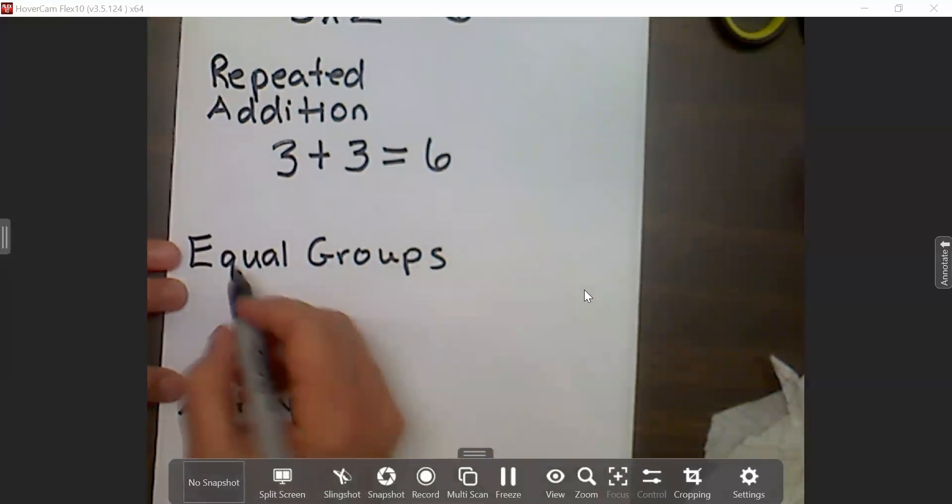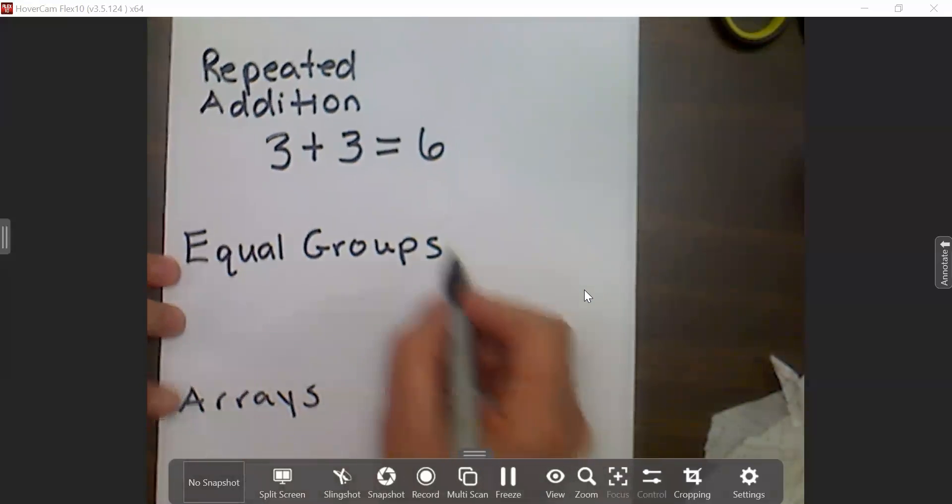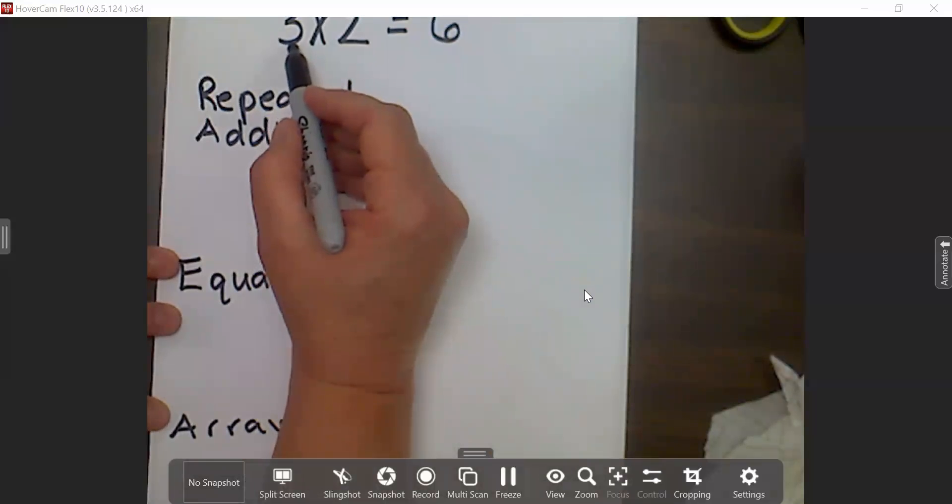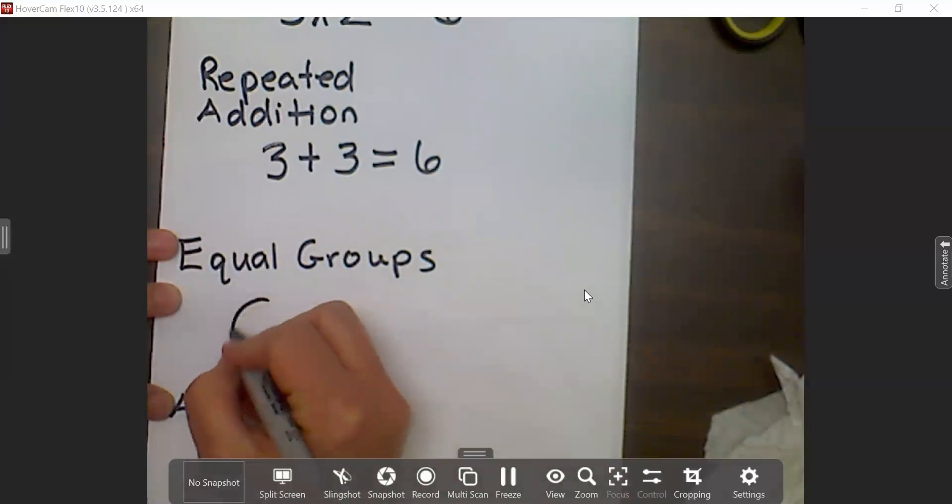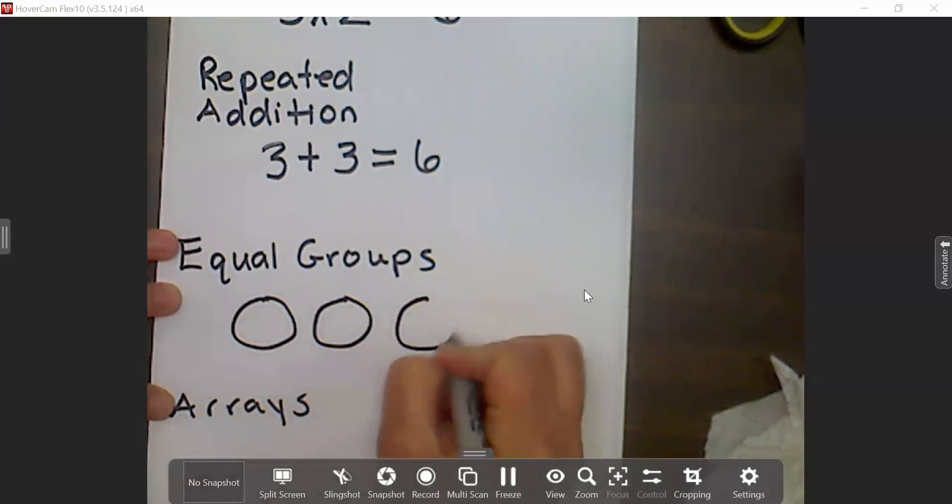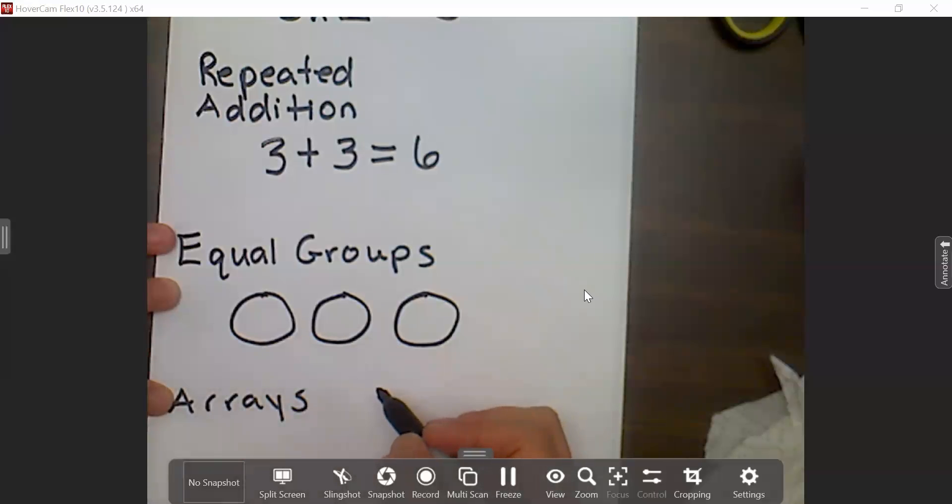The second strategy that we are teaching students is equal groups. So in this problem, three times two, it's telling me I have three groups of two. So we teach the students to draw three circles to represent the groups.